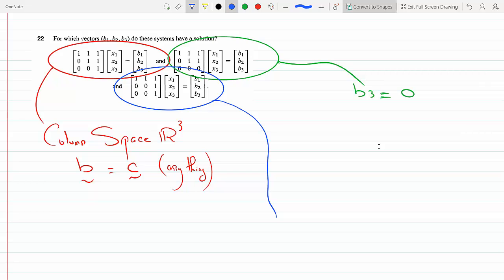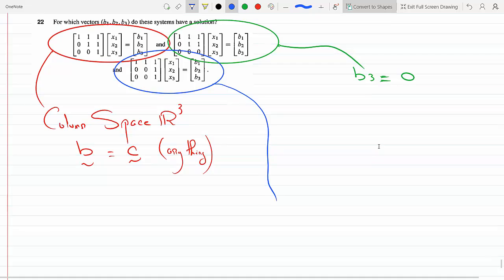And if you want to really work it out, you could rewrite row 3 as row 3 as minus row 2 plus row 3. So the matrix becomes [1, 1, 1] for [x1, x2, x3].